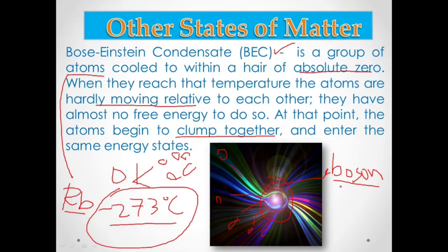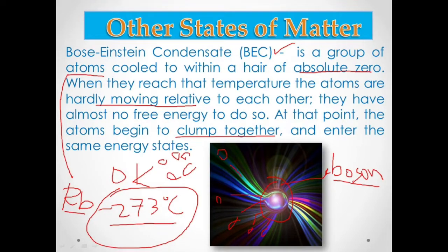Bosons are described as social — they want to go together, they want to clump together. Bosons seek out other bosons. That is the characteristic of the Bose-Einstein Condensate: the bosons within it are social.